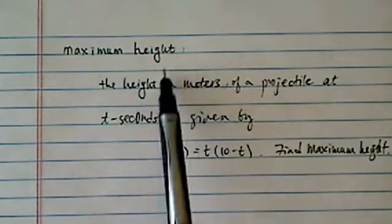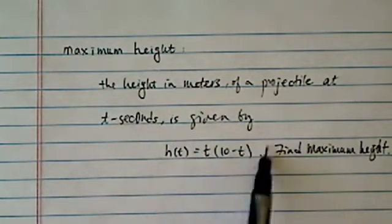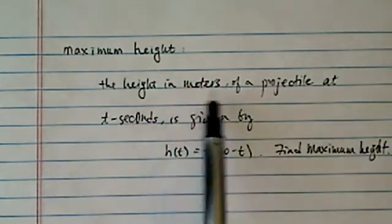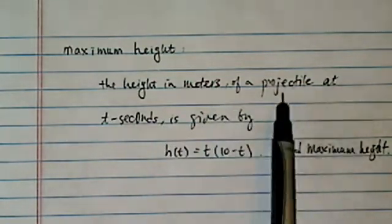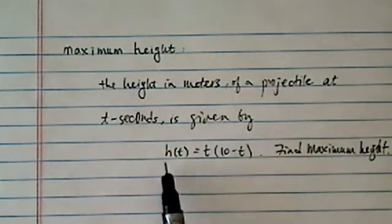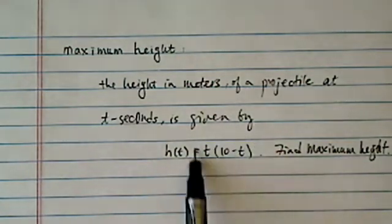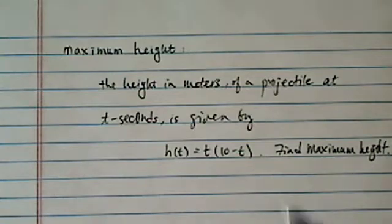Thank you for watching this clip on maximum height. We're given a quadratic equation, basically the height in meters of a projectile in t seconds. It's given by this function. It's actually a quadratic, and we're supposed to find a maximum height.